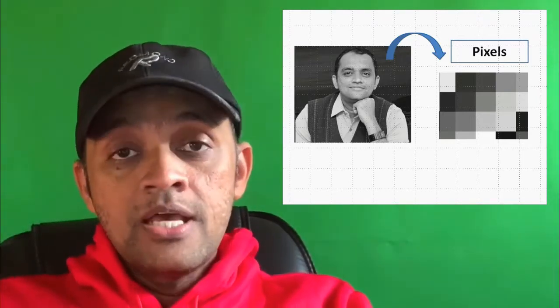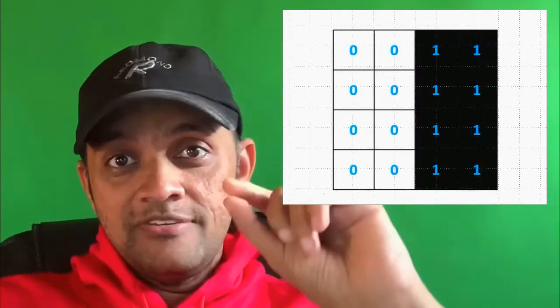So the black pixels are given one and the white pixels we give zero. So any other shade that you find in a grayscale should be between zero and one.